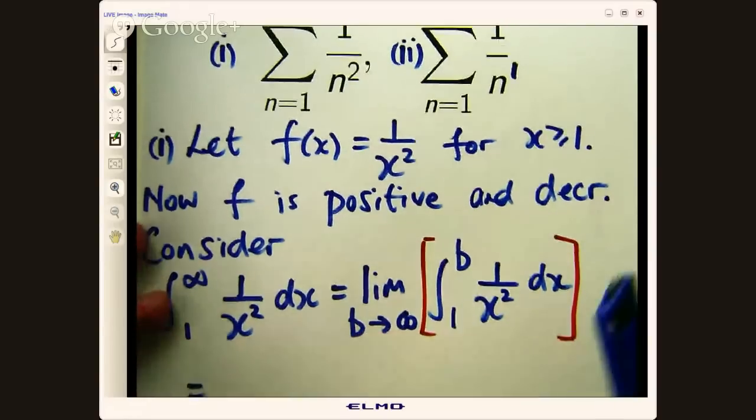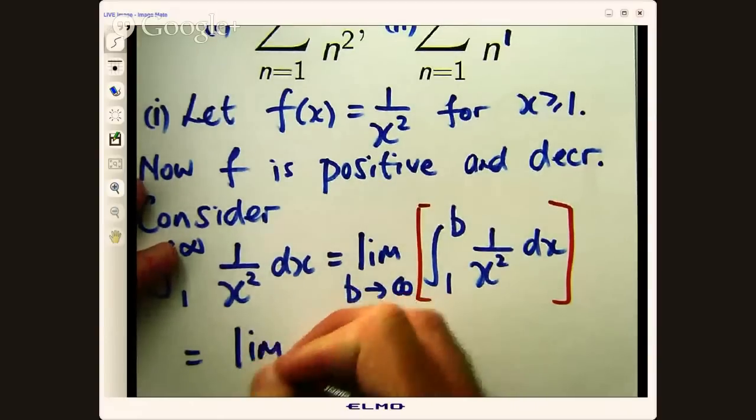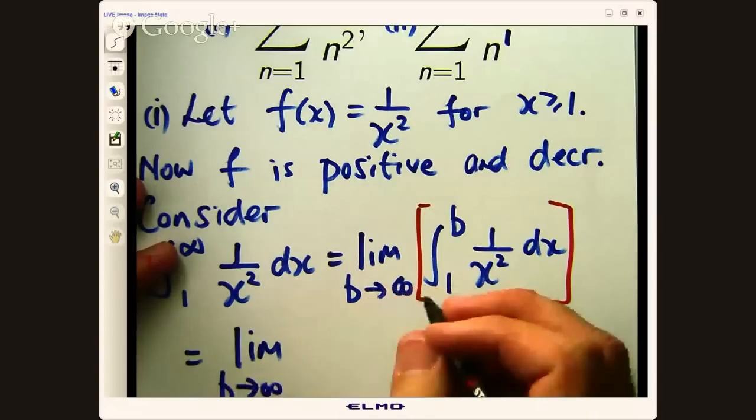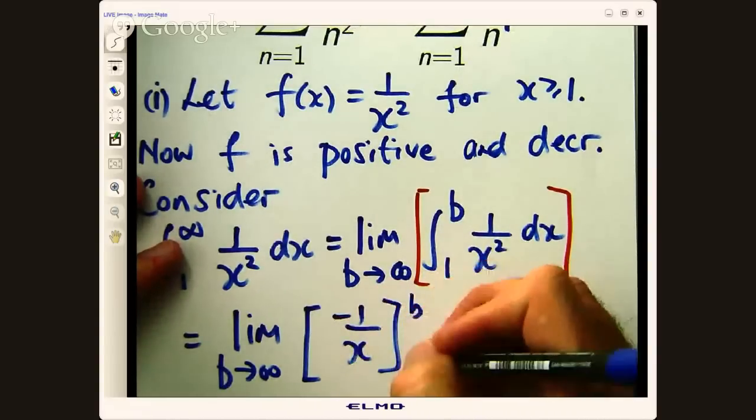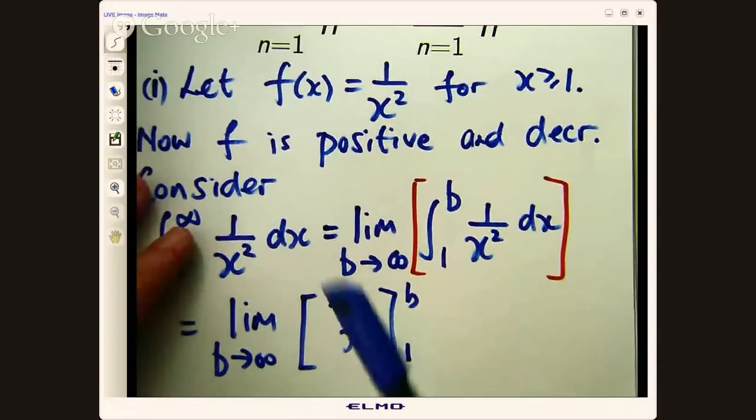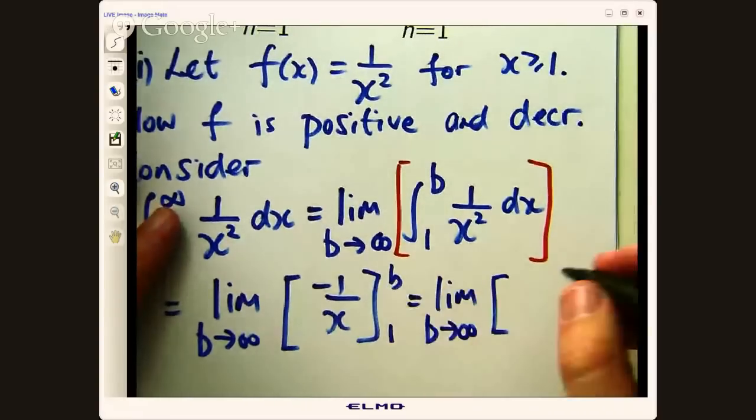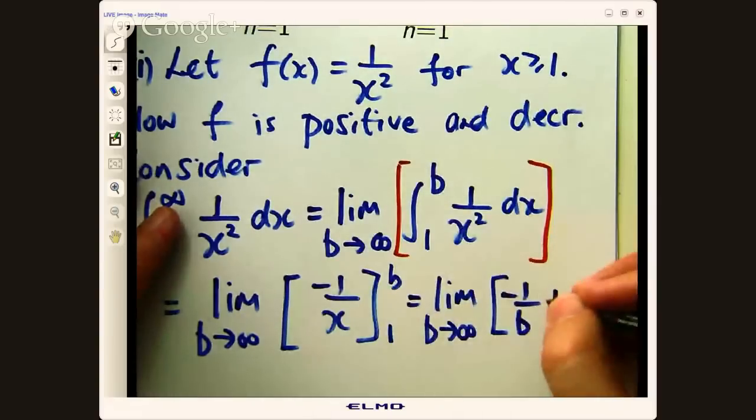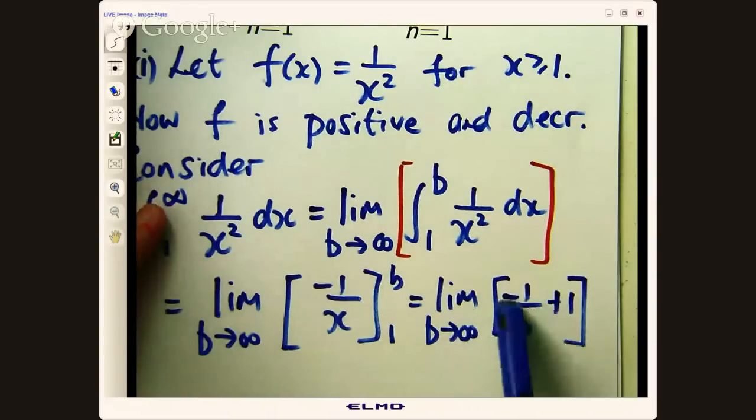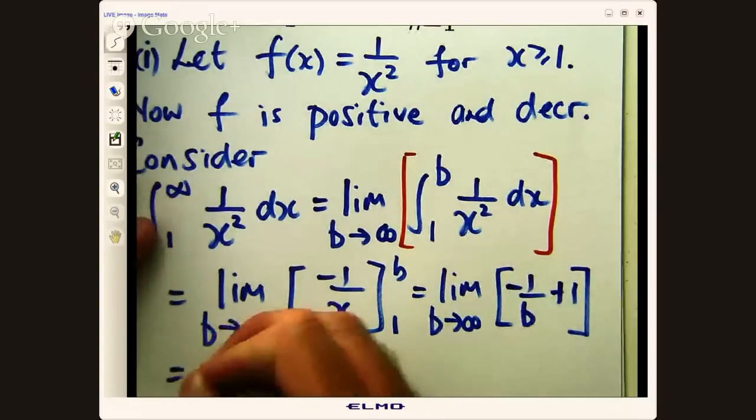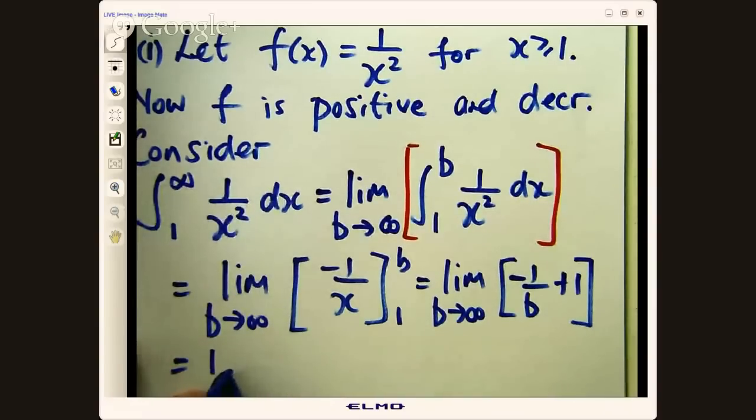So let's do that. If I integrate this, it's like x to the minus two. I increase the power by one and I divide by the new power. So it's going to be negative one on x, b to one. So let's put in x equals b and x equals one. If I put in x equals b, I'll get that, and minus negative one gives us this. And now what happens to this as b goes to positive infinity? This term will go to zero and I'll be left with positive one.